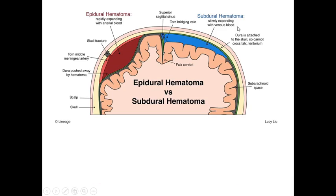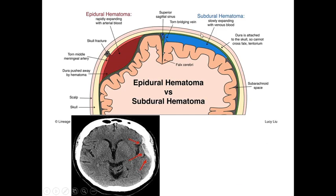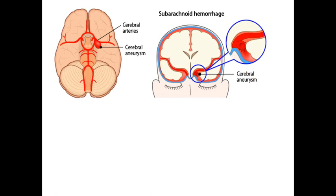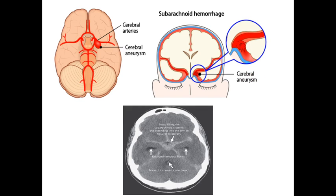These are non-contrast CT scans showing the different hematomas. This is how an epidural hematoma appears on CT, this is a subdural hematoma, and bleeding beneath the arachnoid mater is called subarachnoid hemorrhage — this is how it looks on a non-contrast CT scan.